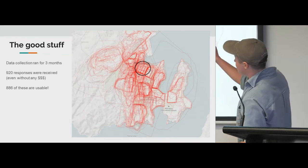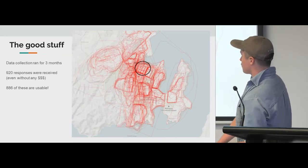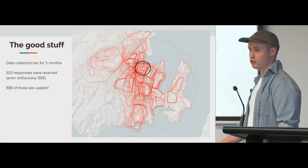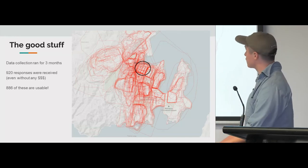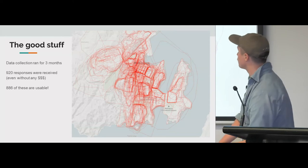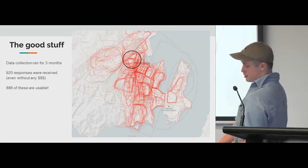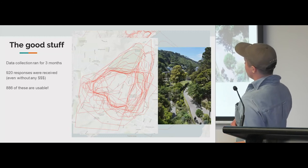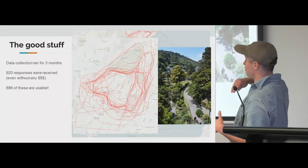There's also the CBD, which had quite a pronounced gridding effect from streets, so a lot of the neighbourhood boundaries form along the streets themselves. You also have Kelburn and the Botanical Gardens — a lot of the boundaries ended where the botanical gardens started, but a lot of them didn't. It raises the question of how does green space impact that?